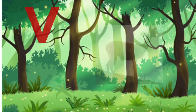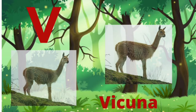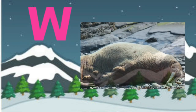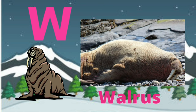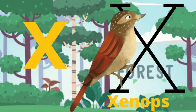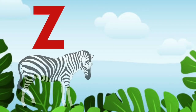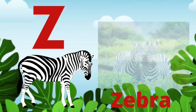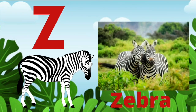V for Vicuna, V-I-C-U-N-A, vicuna. W for Walrus, W-A-L-R-U-S, walrus. X for Xenopus, X-E-N-O-P-U-S, xenopus. Z for Zebra, Z-E-B-R-A, zebra. Thank you!